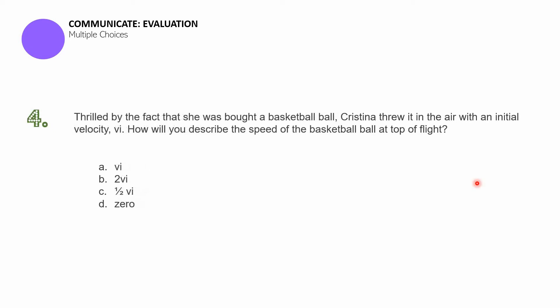Question number four. Thrilled by the fact that she was bought a basketball ball, Christina threw it in the air with an initial velocity. How can you describe the speed of the basketball at the top of flight? So at its highest point? Is it A, equal to the initial velocity? Is it B, did it double? Is it C, was it halved, was it reduced to half of the original initial velocity? Or is it D, was it equal to zero? Remember that we are asking about the velocity, the speed of the basketball at its highest point.